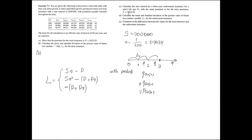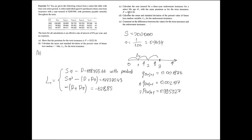Because we know the insured sum S, we know the annual premium P, we know the possible outcomes of this random variable L1, and we can also obtain the probabilities of each of these outcomes using the extract from the life table. Knowing the possible outcomes of the random variable and their probabilities, we can obtain that the expected value of this random variable L1 is equal to 0.